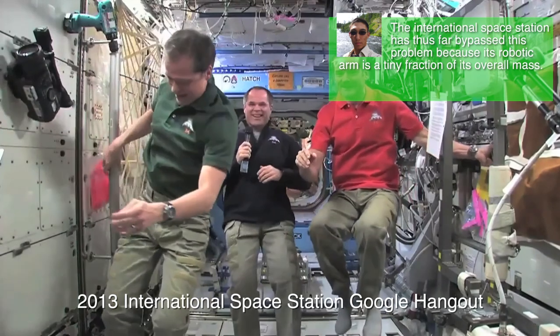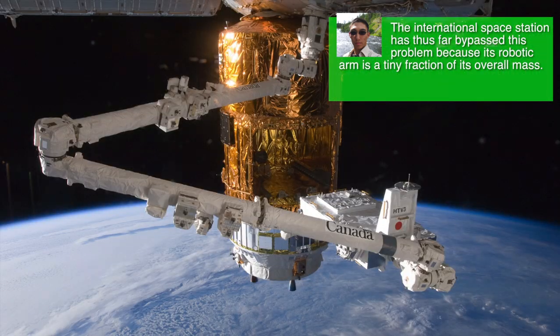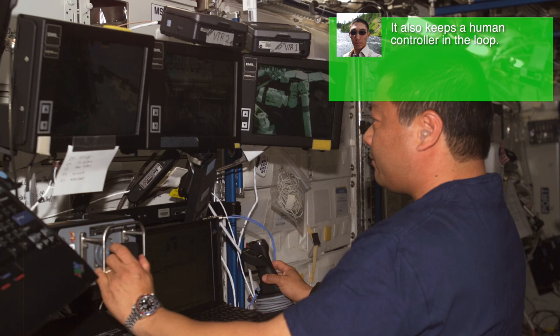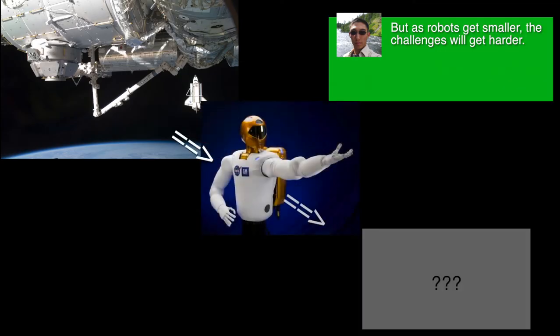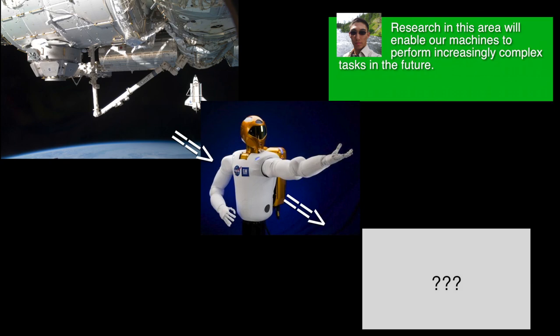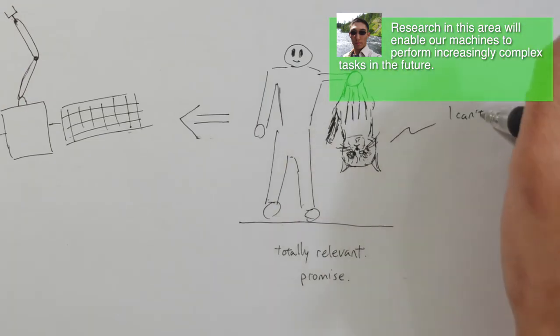The International Space Station has thus far bypassed this problem because its robotic arm is a tiny fraction of its overall mass. It also keeps a human controller in the loop, but as robots get smaller, the challenges will get harder. Research in this area will enable our machines to perform increasingly complex tasks in the future.